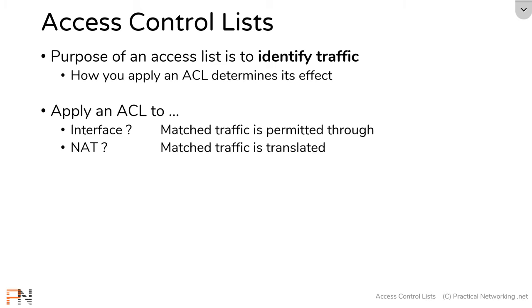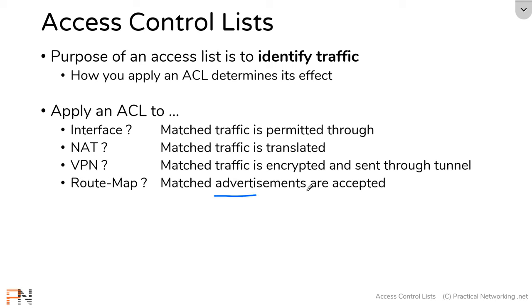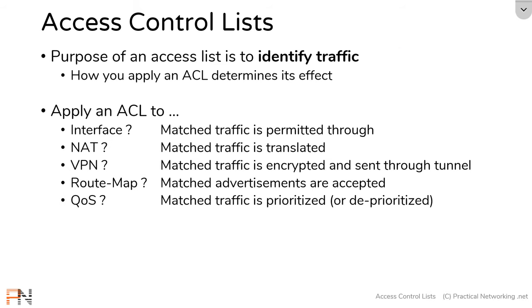For example, if you apply an access list to a network address translation configuration, then whatever traffic is identified by the access list is processed through NAT. If you apply an access list to a VPN configuration, then whatever traffic you identify is encrypted and sent through a particular tunnel. If you apply your access list to a route map, then whatever advertisements match your access list are accepted by your routing process. If you apply your access list to quality of service, then whatever traffic matches is going to be prioritized or deprioritized.